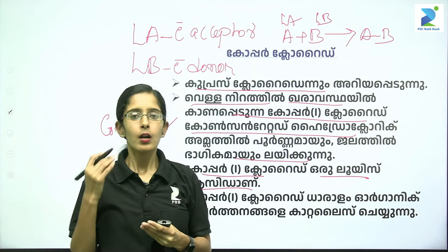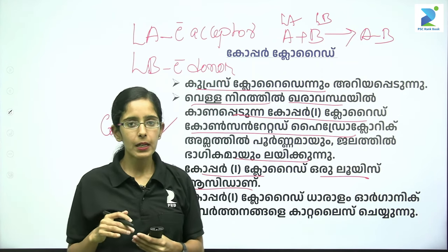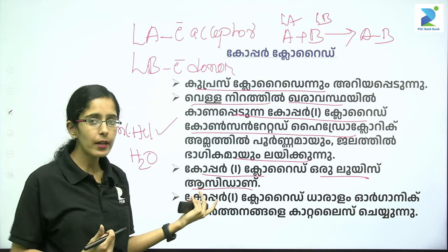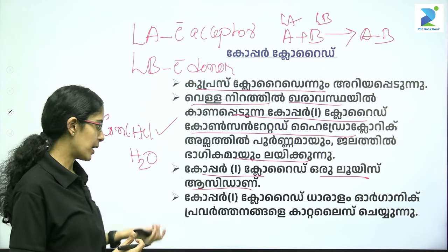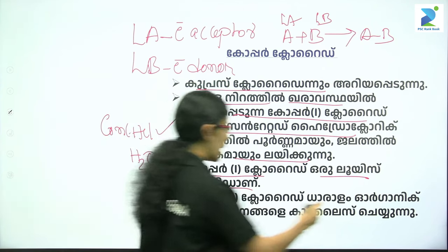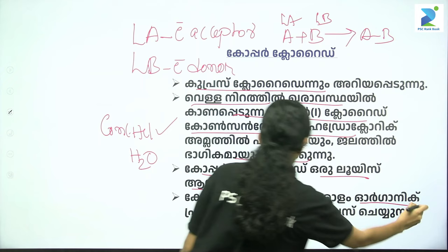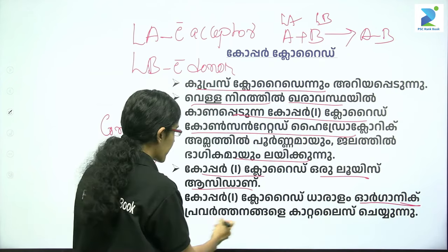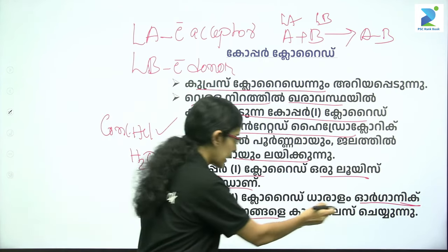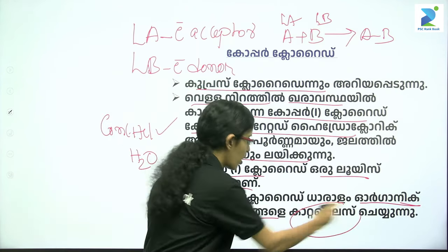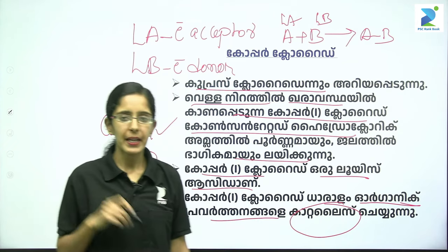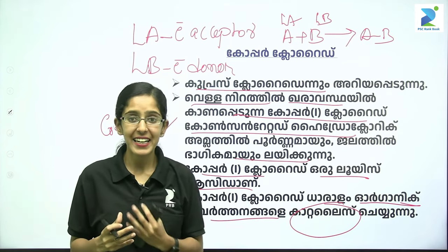Copper chloride is a Lewis acid and an electron acceptor. Copper chloride is also used as an organic catalyst. That is an important application of copper chloride.